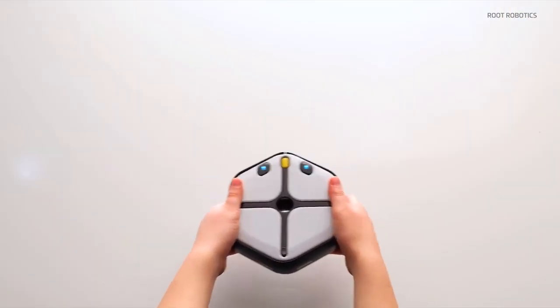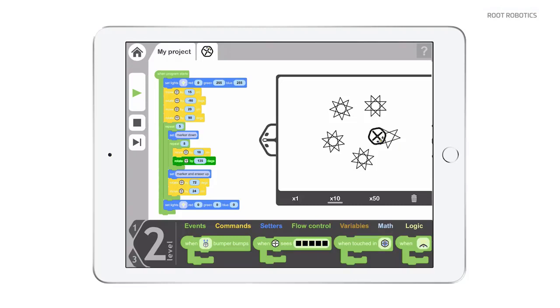Root is the first coding robot that walks anybody from a graphical environment all the way up to text-based coding by using drawing as our medium.